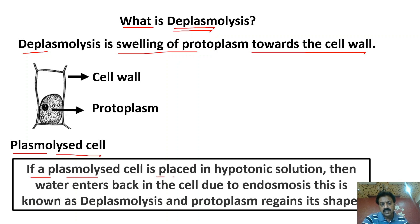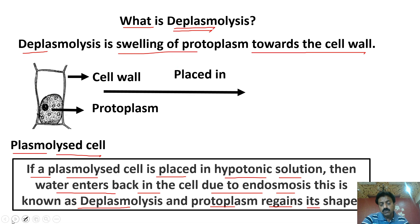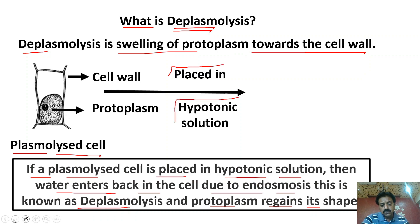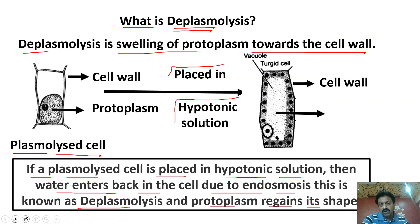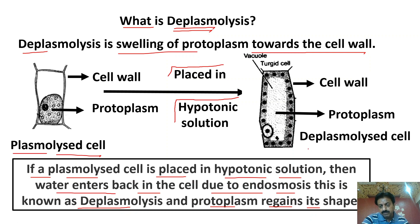Dear students, if a plasmolyzed cell is placed in hypotonic solution, then water enters — paani dobaara is cell mein bhar jaayega — due to endosmosis. Paani ka andar aana — that is known as deplasmolysis — and protoplasm regains its shape. Toh dear students, humne is plasmolyzed cell ko hypotonic solution mein place kar diya. Toh dekhen — isne apna original shape regain kiya. Yeh uski cell wall hai, andar protoplasm phir se bhar gaya, aur phir yeh cell wall se contact mein aa gaya. Toh is cell ko hum kahenge deplasmolyzed cell — aur jo recovery hui hai — recovery from plasmolysis — is called deplasmolysis.